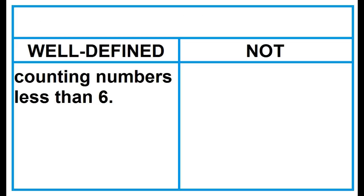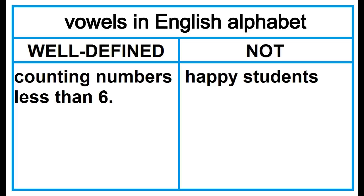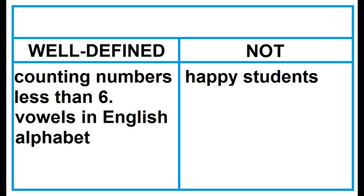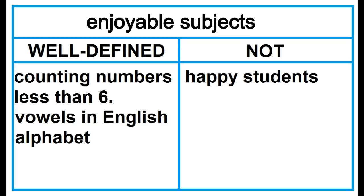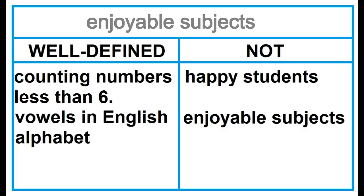Counting numbers less than 6: well-defined. Happy students: not well-defined. Vowels in English alphabet: well-defined. Enjoyable subjects: not well-defined.